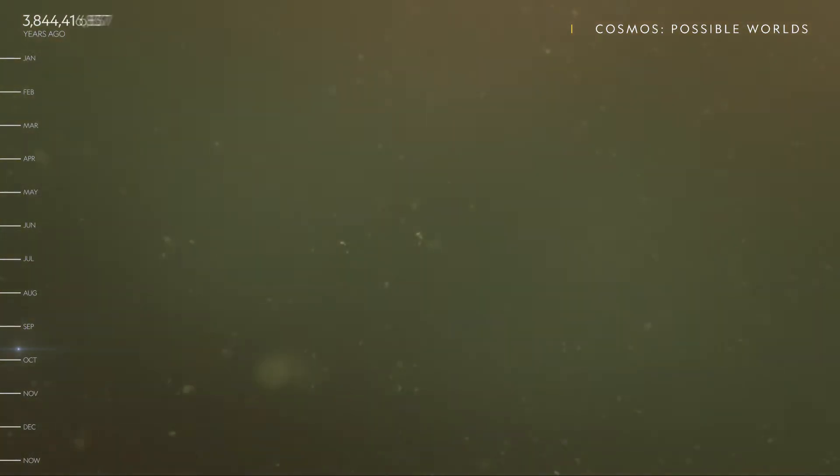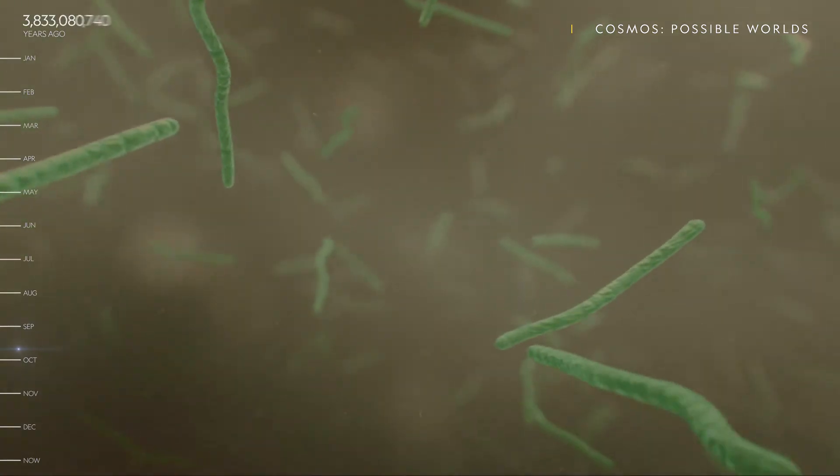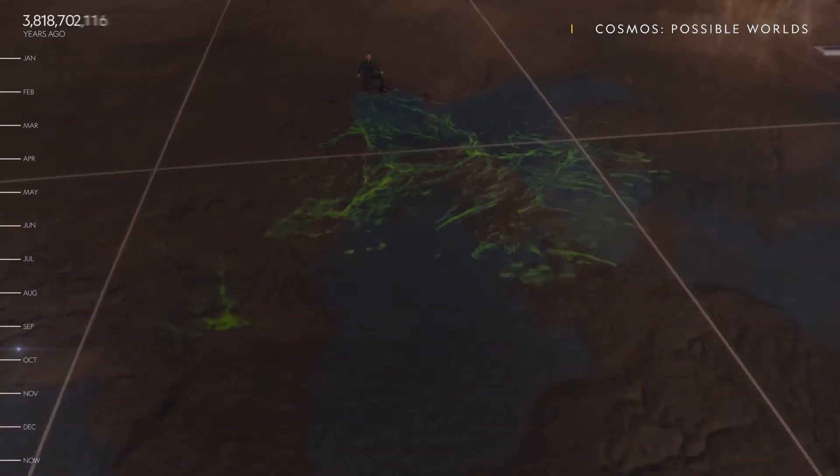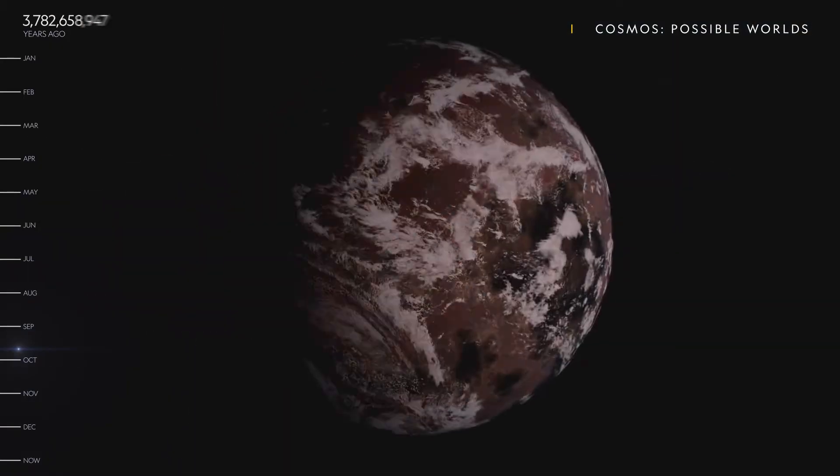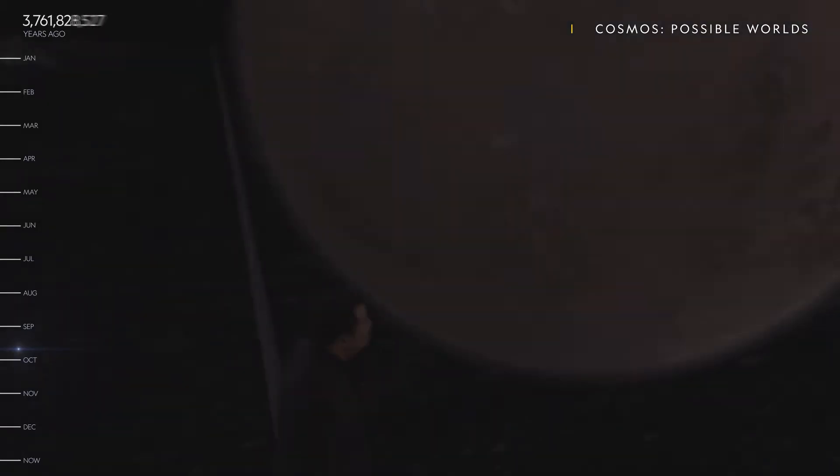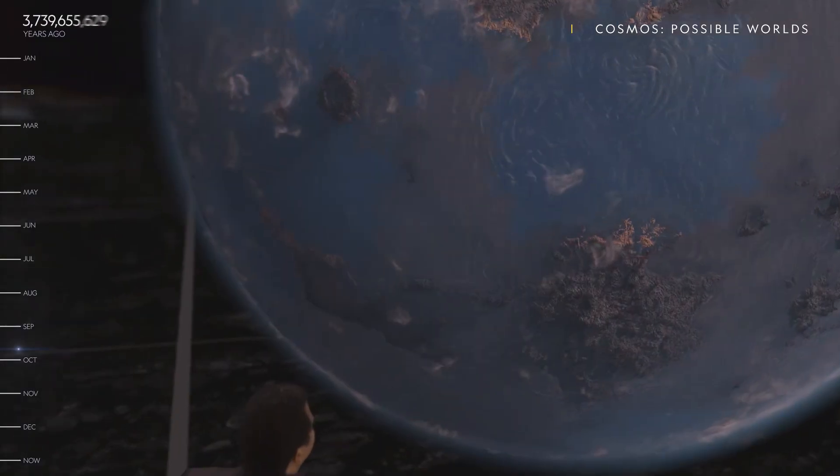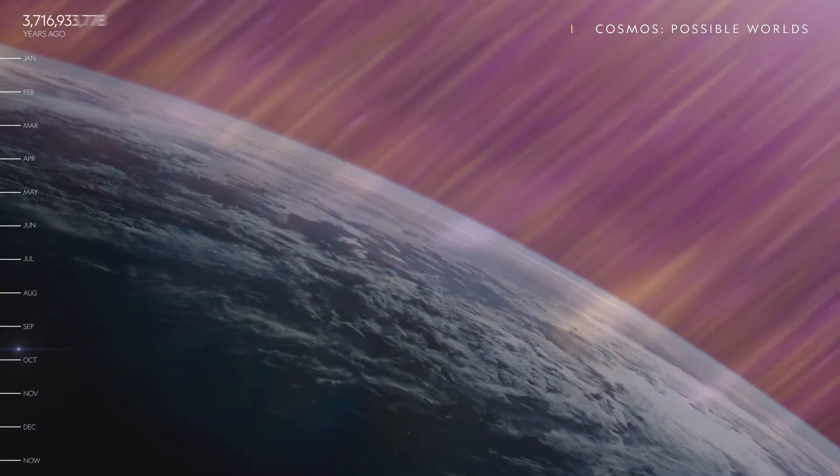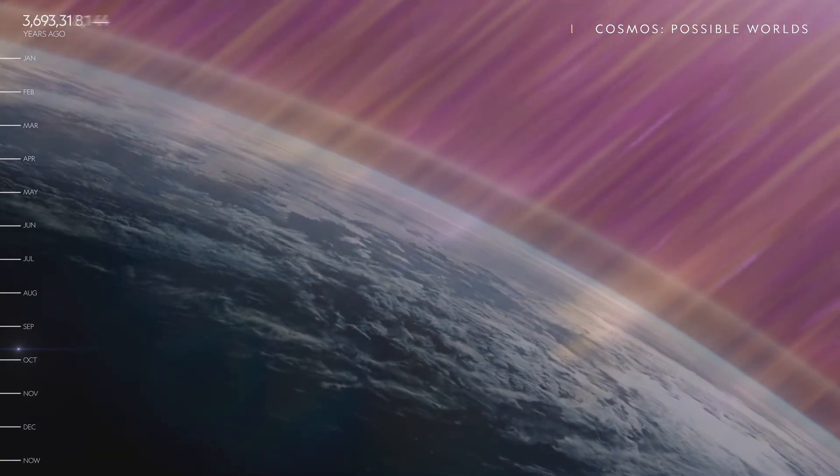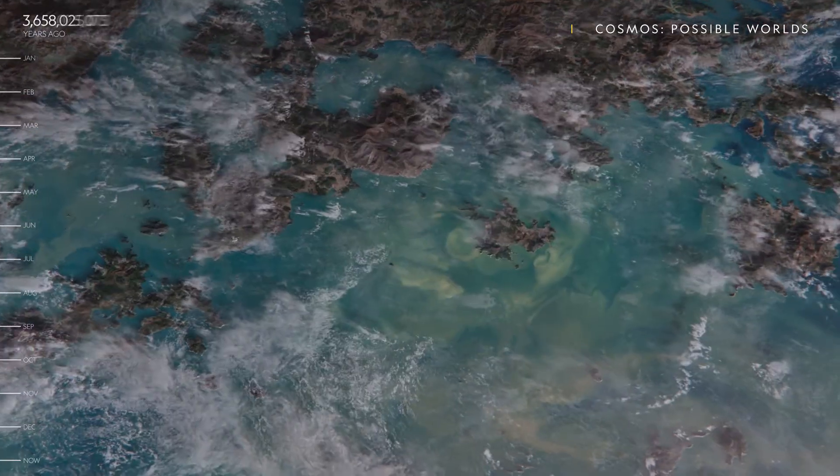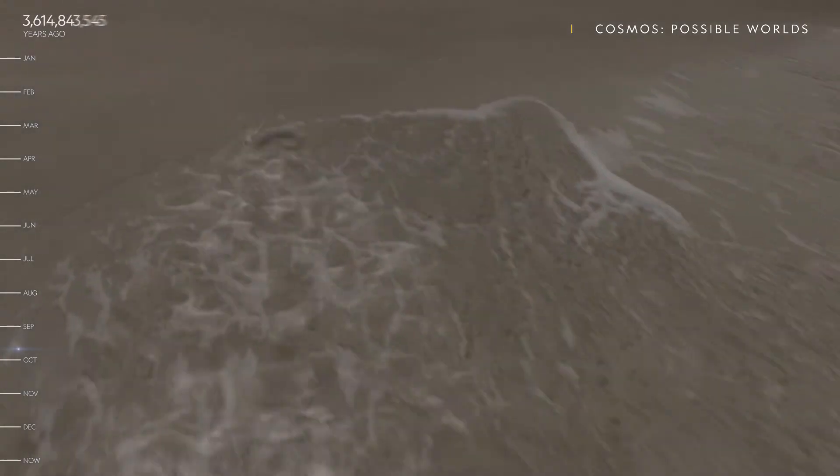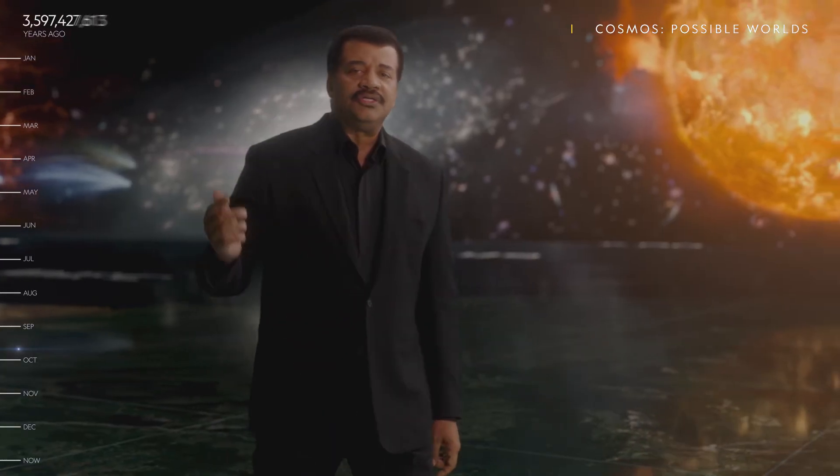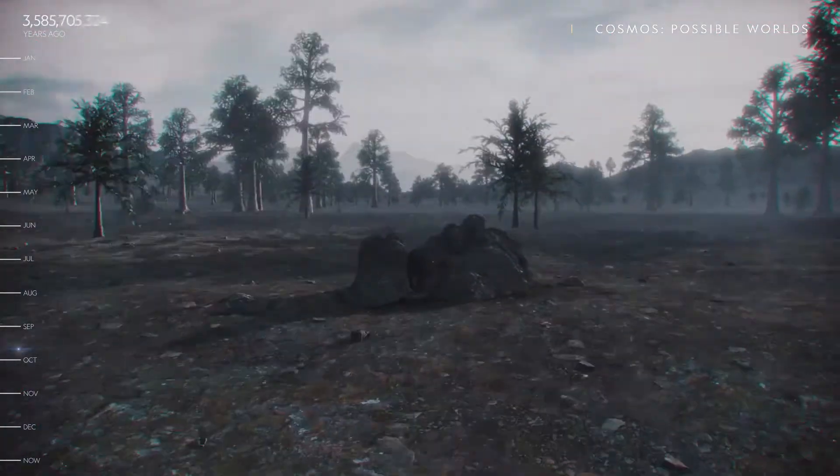Tiny creatures that could shrug off the methane and eat carbon dioxide and sunlight for breakfast found a way to make a living in the ocean. By gobbling up the carbon dioxide and giving off oxygen, they turned the sky blue. And then the oxygenation of the atmosphere created the ozone layer. For the first time, life was free to leave the oceans for the land. Now life could grow larger and venture forth into new territories.